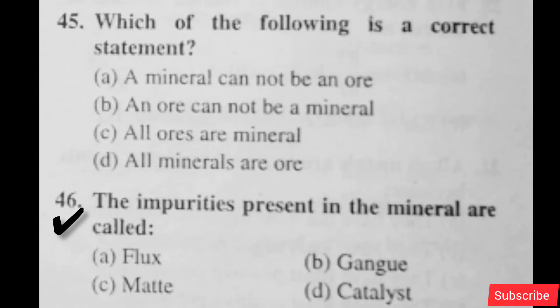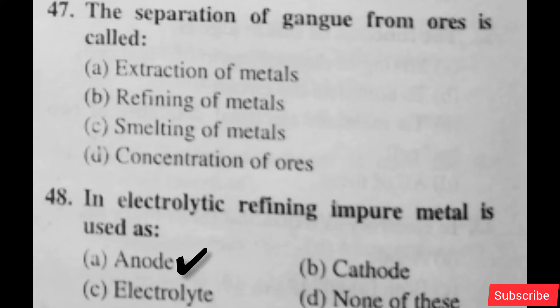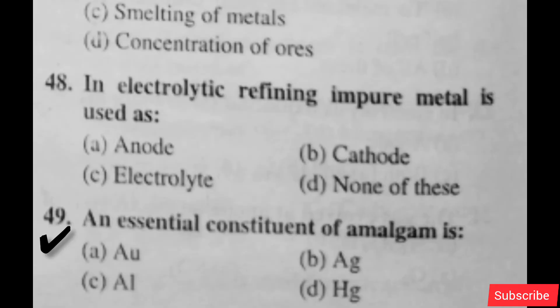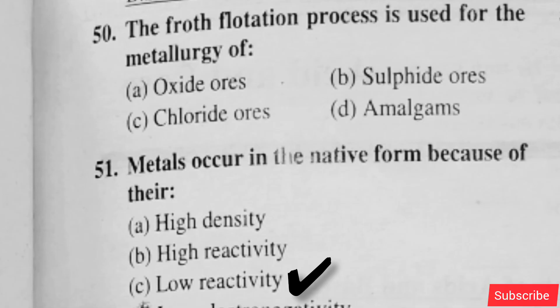The impurities present in the mineral are called — option B is right. The separation of gangue from ores is called — option D is right. In electrolytic refining, impure metal is used as anode — option A is right. An essential constituent of amalgam is — option D is right. The froth flotation process is used for the metallurgy of — option B is right.